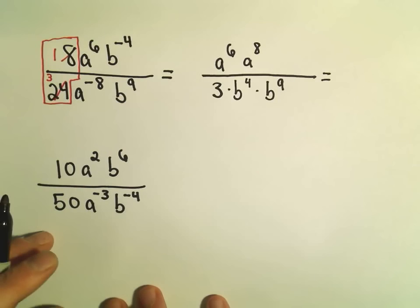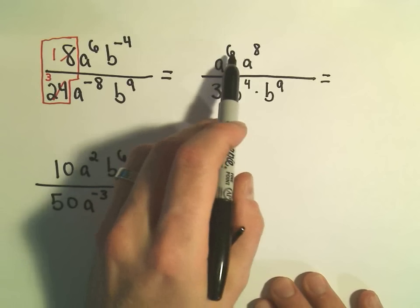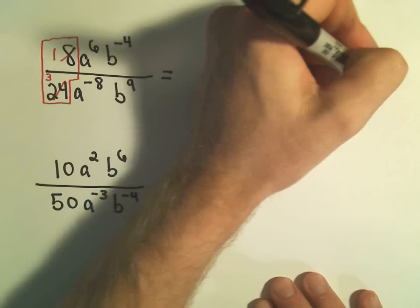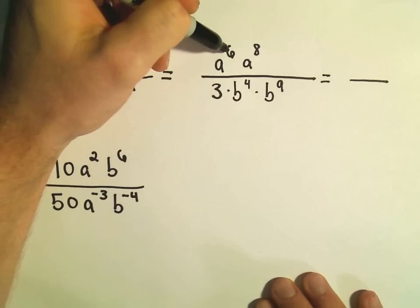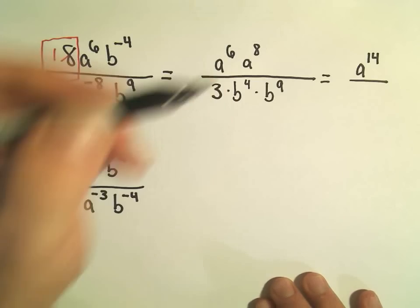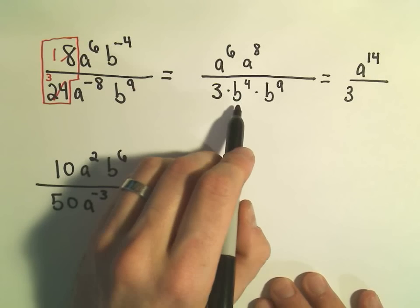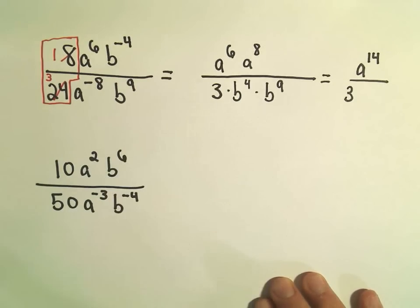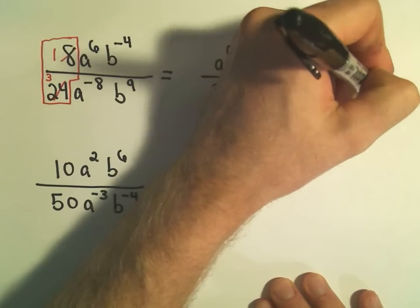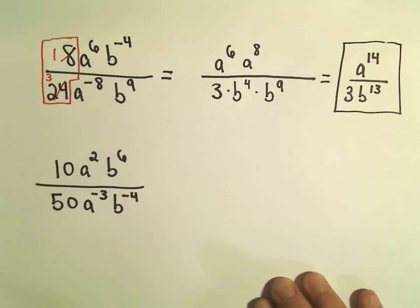And now I can just use the property. Since we're multiplying like bases, we can add the exponents together. So we have a to the 6th times a to the 8th. That'll give us a to the 14th power. The 3's just hanging out. Then we have b to the 4th times b to the 9th. Well, that'll give us b to the 13th power. And that would now be considered simplified.